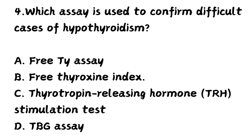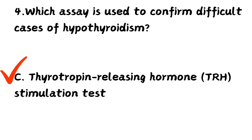Next question: which assay is used to confirm difficult cases of hypothyroidism? Option A, free T4 assay. Option B, free thyroxine index. Option C, thyrotropin releasing hormone (TRH) stimulation test. Option D, TBG assay. The right answer is Option C — the TRH stimulation test is used to confirm difficult cases of hypothyroidism.